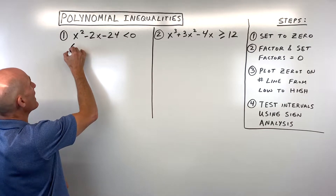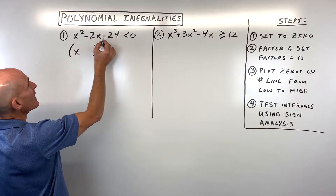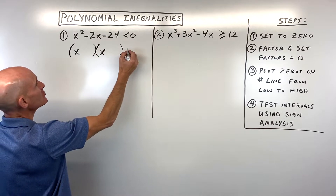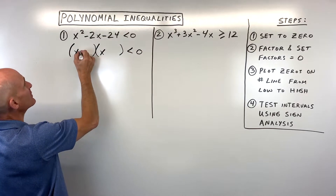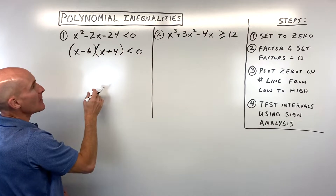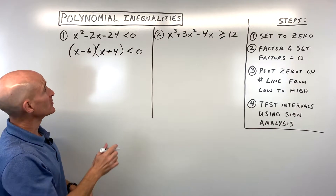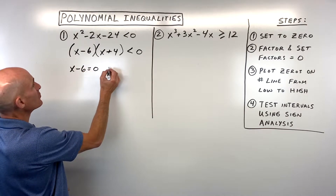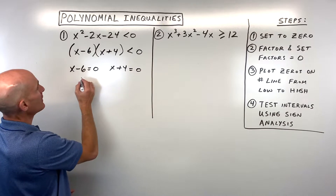We say: what two numbers multiply to negative 24 but add to negative 2? That would be negative 6 and positive 4. Then we set each factor equal to zero: x minus 6 equals zero, and x plus 4 equals zero.